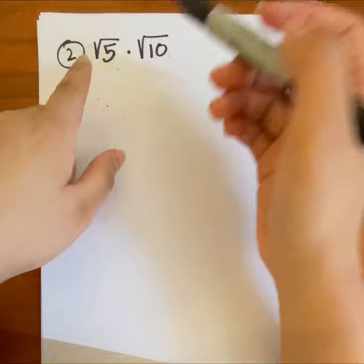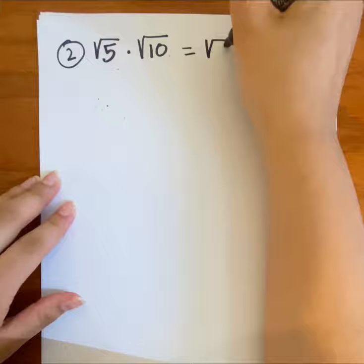Okay, so here we're going to be solving solution number two. The first thing we're going to do is multiply both of these, and we're going to end up with radical 50.